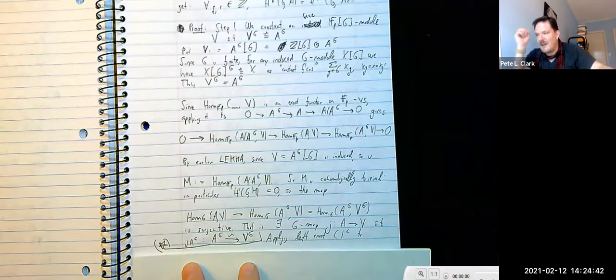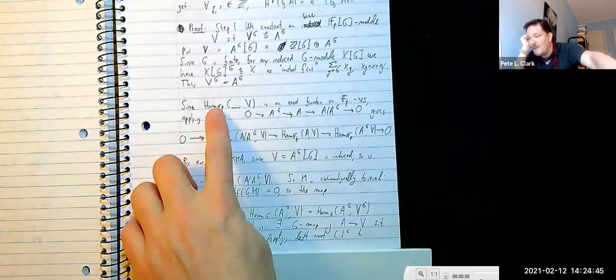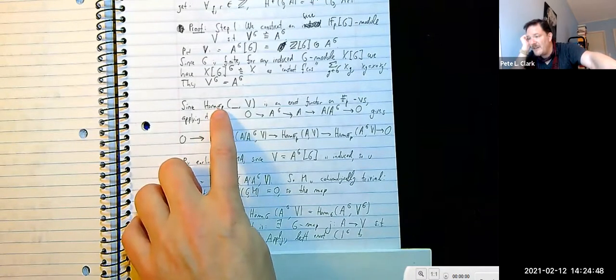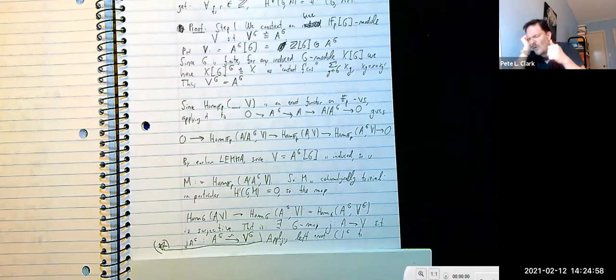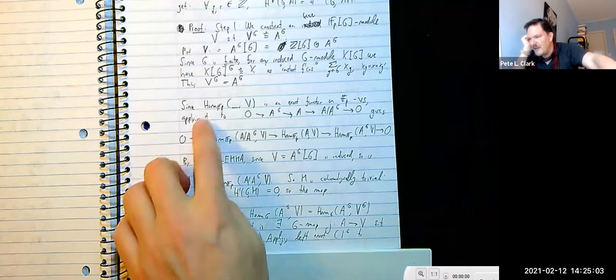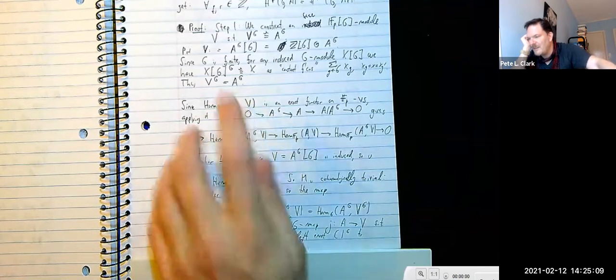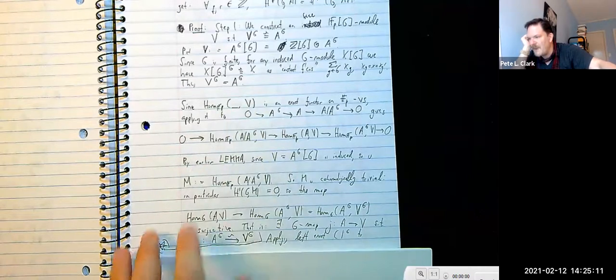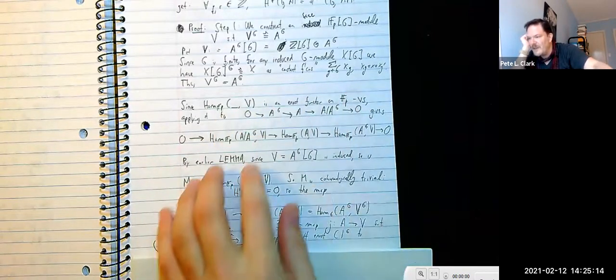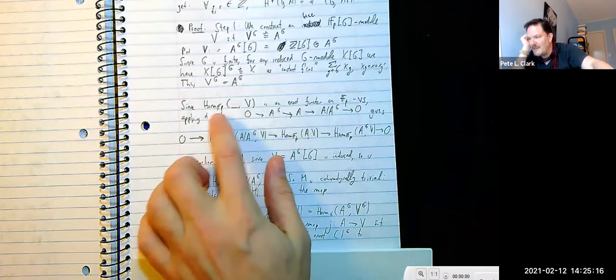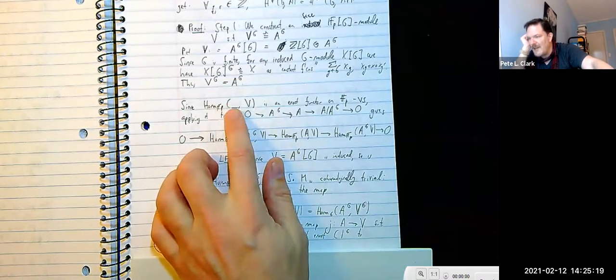Now I take Hom_F_p, and I could take Hom_Z since an F_p-module is just a Z-module on which p·x = 0 — totally the same thing. This is an exact functor because F_p is a field, and over fields everything is projective and injective.